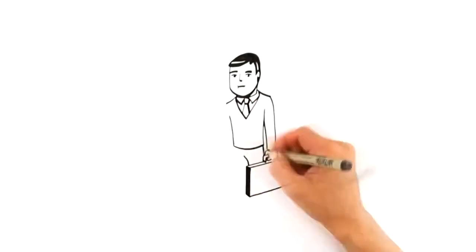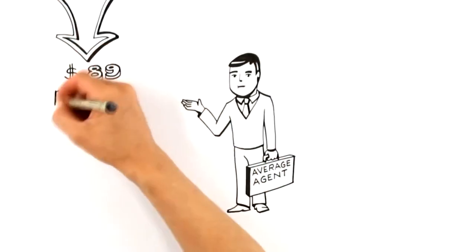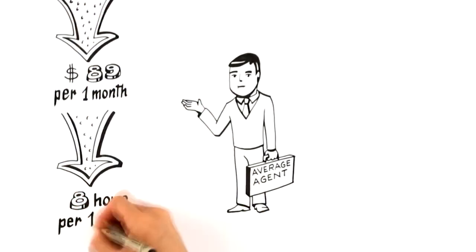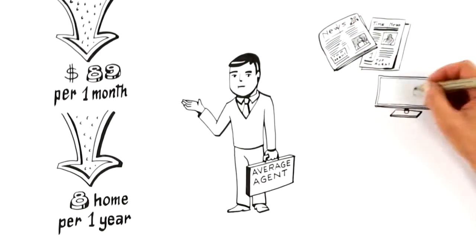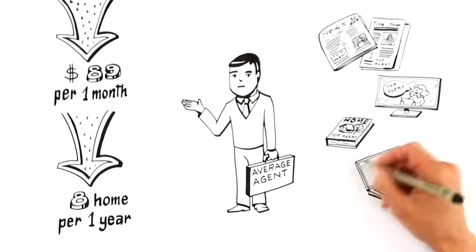Exposing your home to the market requires marketing. Research shows that the average agent only spends $89 a month on marketing and only sells an average of eight homes per year. On the other side, top agents will tout their large budgets for newspaper, TV, home magazines, and a list of hundreds of websites where they advertise.